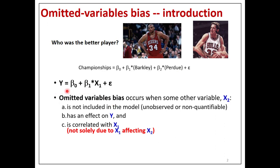That's really what omitted variables bias is about. When you have a regression y equals beta zero plus beta one times x one, there is omitted variables bias when some other variable x two is not included in the model — maybe it's just not observed, maybe it's not quantifiable. It has an effect on the dependent variable y, and it's correlated with x one, not solely because x one affects x two. If it were solely due to x one affecting x two, that's a mediating factor, and we learned in a prior video that you don't want to control for mediating factors.